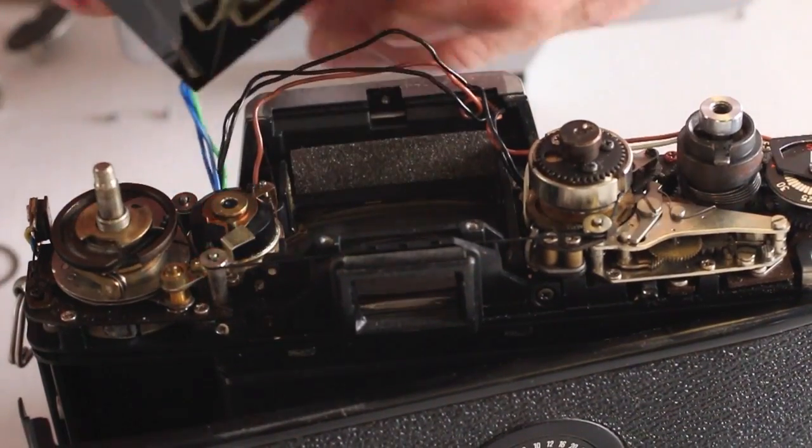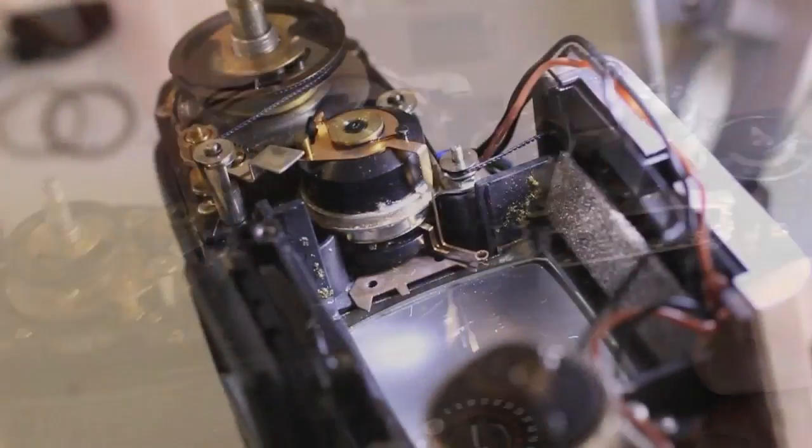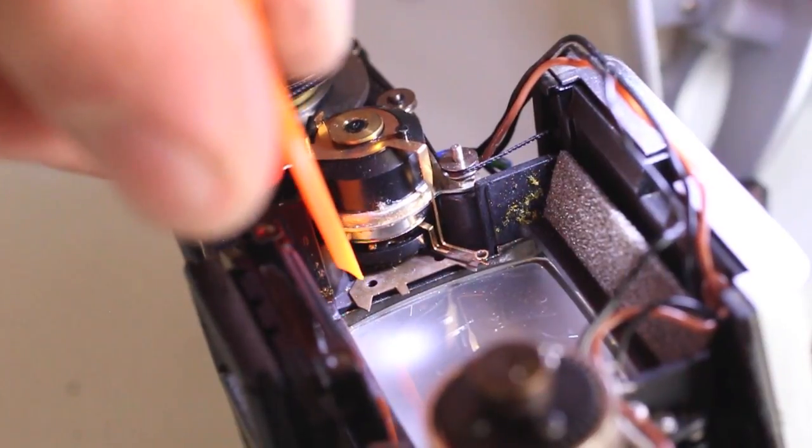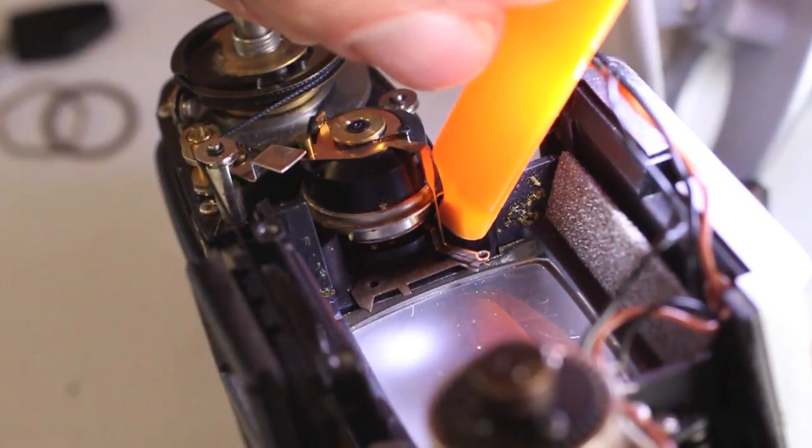Over time, the galvanometer of the Minolta SRT series of cameras will stick in the up position due to a very small foam cushion located at the bottom and top of the needle sweep.